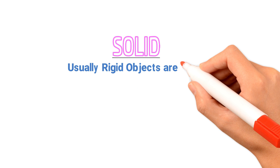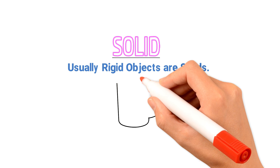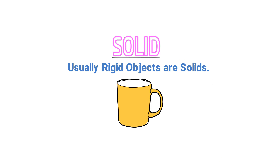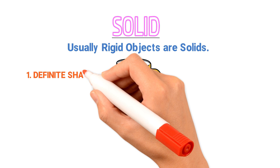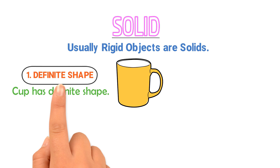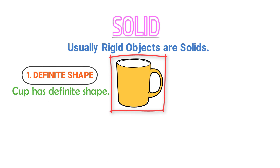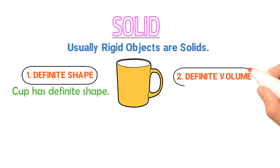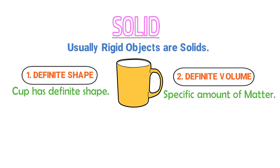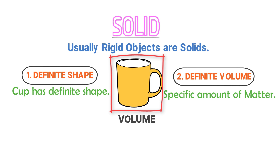Usually, rigid objects are solids. For example, this curve. The first property of solid objects is that they have a definite shape. The shape of this curve is definite — its shape doesn't change. Even if you carry it to space, its shape would remain the same. Secondly, solids have definite volume. For instance, you can put a specific amount of water or matter in this curve, and its volume will also remain the same, even if you carry it to space or anywhere.